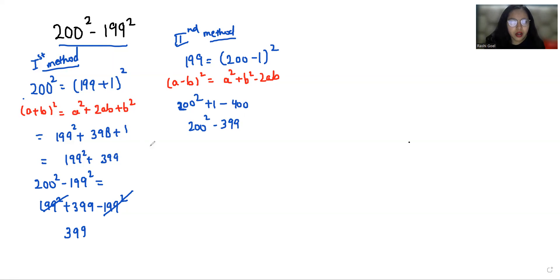So let's put the value here in place of that is 200 square minus 199 square. We can write 200 square minus 200 square minus 399. So let's solve the bracket. Now we can cancel out this. So our answer is 399.